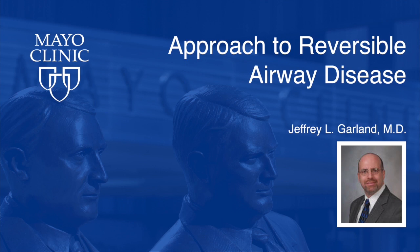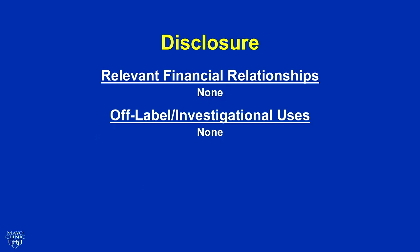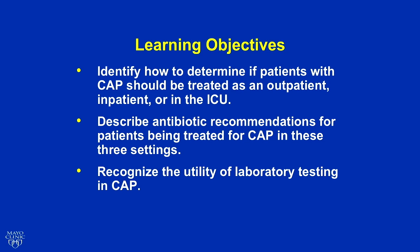The two lectures I'm going to give you today are pulmonary lectures. One we're going to see here on community-acquired pneumonia, and the second one is going to be on asthma. I don't have any disclosures. Learning objectives for this talk are to identify how to determine if patients with community-acquired pneumonia should be treated as outpatients, inpatients, or in the ICU. We'll also describe antibiotic recommendations for patients with CAP based upon their clinical settings and degree of severity — so what antibiotics do you use — and recognize the utility of some of the laboratory testing.